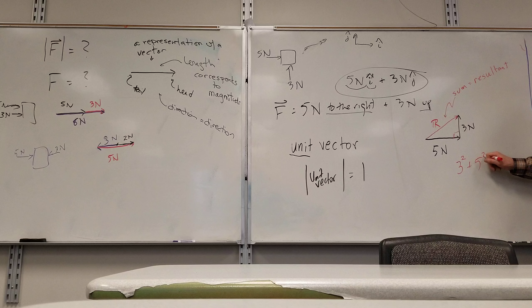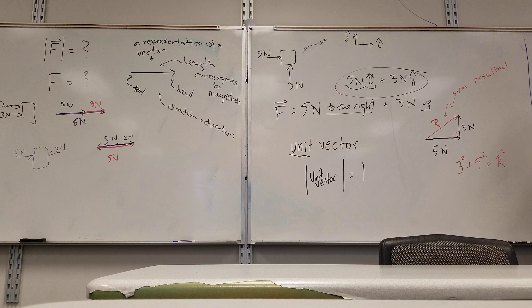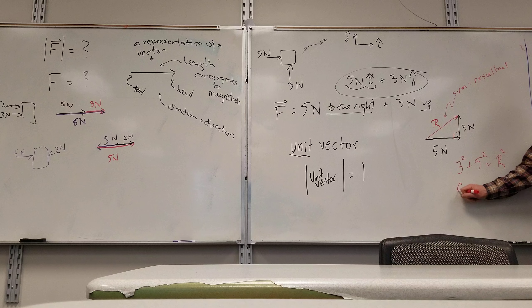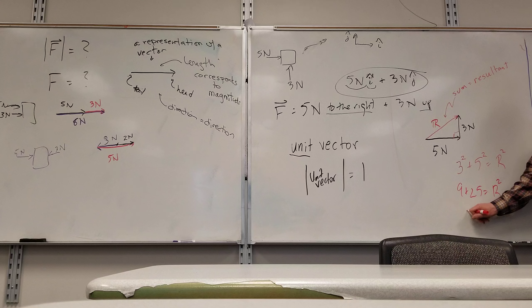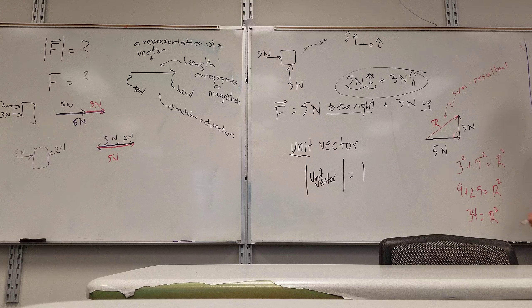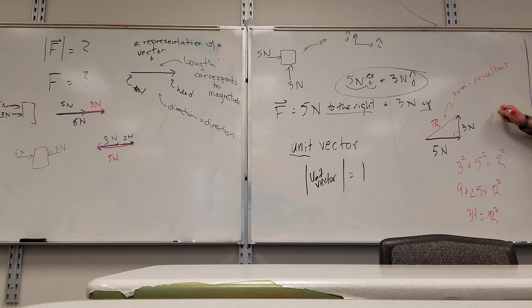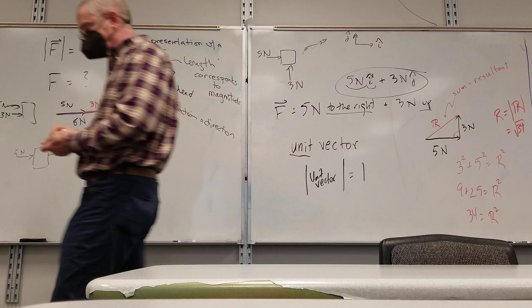3 squared plus 5 squared is equal to R squared. 9 plus 25 is equal to R squared. 34 is equal to R squared. The magnitude of my resultant, which I could have written as absolute value symbol around my vector symbol, is whatever the square root of 34 is. I'm going to let people catch up on the right end and then I'm going to talk about a mistake that's on the board.